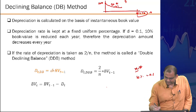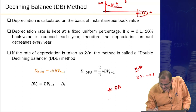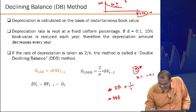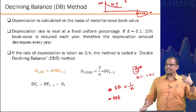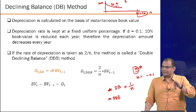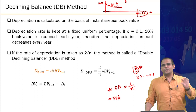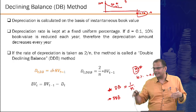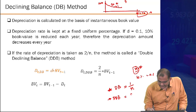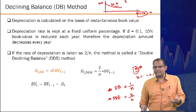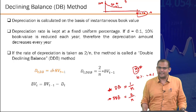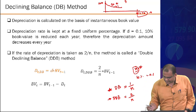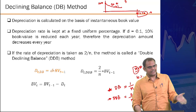There are two variants: Declining Balance (DB), where fraction x equals 1/N, and Double Declining Balance (DDB), where x equals 2/N. In DB, you only need the initial B value and number of periods N. DDB uses twice the fraction, so depreciation is faster in the beginning.